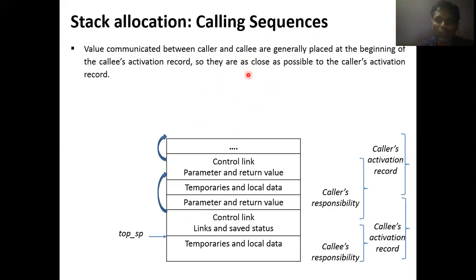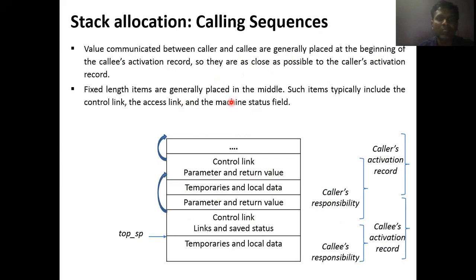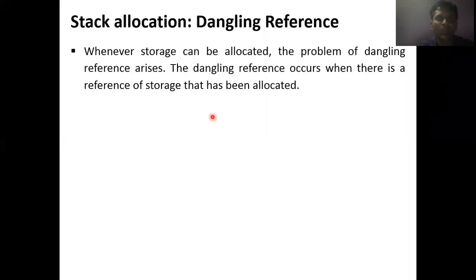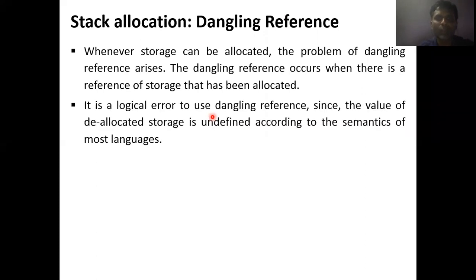The activation record information will be stored when performing calling sequences — temporary and local data, saved machine status, caller's activation record and callee's activation record. The value communicated between caller and callee is generally placed at the beginning of the callee's activation record, because it is close to the caller's activation record. Fixed-length items such as the control link, access link, and machine status are generally placed in the middle. Dangling references can occur when allocated memory is not de-allocated — the de-allocated memory is not used by another procedure, but attempting to access it causes errors.